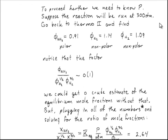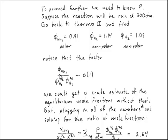To go further, we have to specify the pressure to get a numerical factor. Suppose the reaction is run at 300 atmospheres — high pressure to drive it to the right. The fugacity coefficient for ammonia is 0.91 at these conditions, because it's a polar gas that tends to be more dense than an ideal gas. The fugacity coefficient for nitrogen is 1.14 and for H₂ is 1.09 — slightly larger than one because they're nonpolar and less dense than expected at 300 atmospheres. The ratio of fugacity coefficients for ammonia relative to nitrogen and hydrogen is on the order of 1.